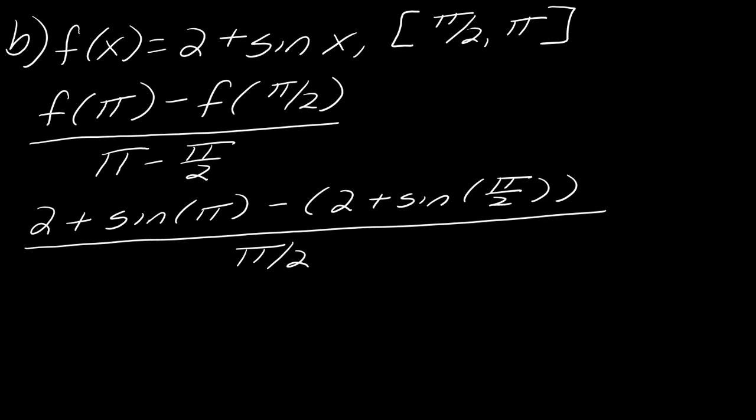And so then as I work through this, the 2s are going to drop out, and then sin(π) is actually equal to 0, and then sin(π/2) is equal to 1, and then this is still negative π/2, so I get negative 1 over π/2. So now I can flip this π/2, so that this ultimately equals negative 2 over π. And so that would be my average rate of change in this case.